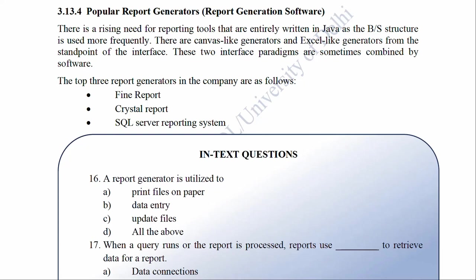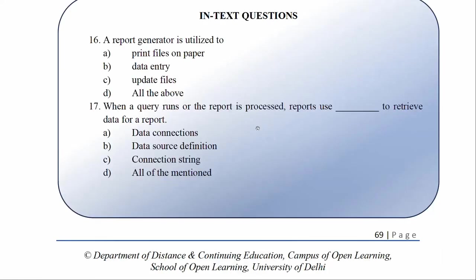The process of retrieving the data from the database, structuring it, and exporting it as reports is referred to as report production. It offers illuminating insights and reassuring references to decision makers. A skilled report generator can be a valuable ally in business at every stage of reporting. It is best to conduct a thorough study on each feature of report generation software before selecting the best option. Popular report generators include FineReport, Crystal Report, and SQL Server Reporting System. In-text questions: Number 16 — A report generator is utilized to: A. Print files on paper, B. Data entry, C. Update files, D. All of the above.